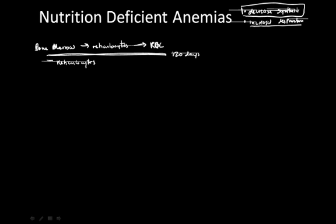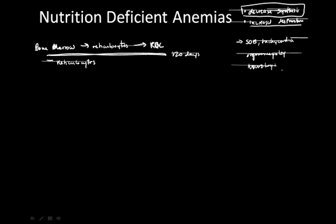Anemia has a couple of major symptoms and clinical presentations, though these might not occur in all patients. These typically include shortness of breath and tachycardia, as the heart and lungs work harder to exchange gases and pump blood through the body even when there's a decreased carrying capacity. There can also be organomegaly as the liver and spleen try to compensate, and with decreased oxygen supply there can be neurological symptoms including dizziness, fatigue, and altered mental status.